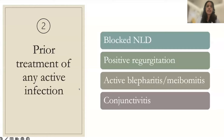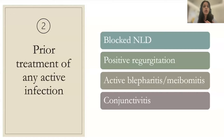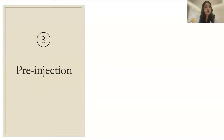Tip two: prior to anti-VEGF or any injection, treat any active infection. Blocked nasolacrimal duct, positive lacrimal sac regurgitation, active blepharitis, chalazion, or conjunctivitis must all be treated beforehand. If these conditions persist when giving the anti-VEGF injection, the risk of endophthalmitis is significantly increased.